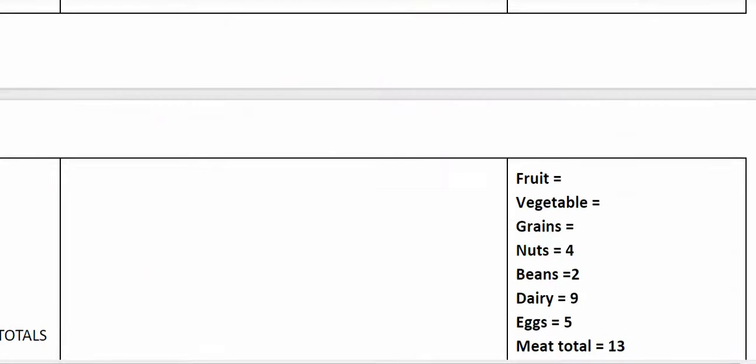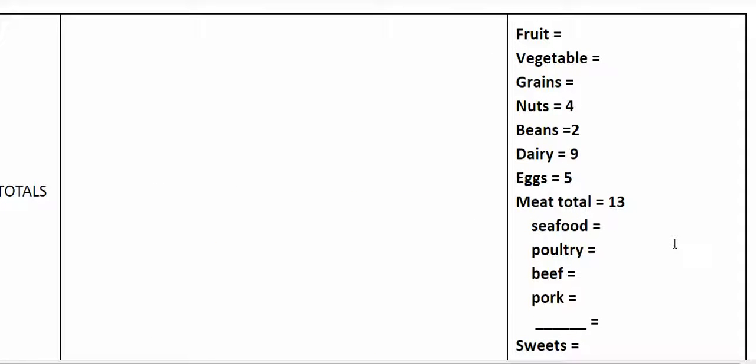Let's scroll up to see how many servings of protein we had. I just threw in some numbers here. Let's say we had 4 servings of nuts, 2 beans, 9 dairy, 5 eggs, and 13 meat.